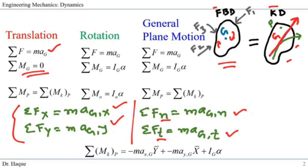The reason the moment about point Z is zero is that point Z is the mass center. For rectilinear motion, when we assume the acceleration at Z, it goes through the mass center Z. And for curvilinear motion, when we assume the acceleration A_G, it also goes through the mass center G. So the moment arm distance is 0, meaning the moment about point Z is always 0 for translation.